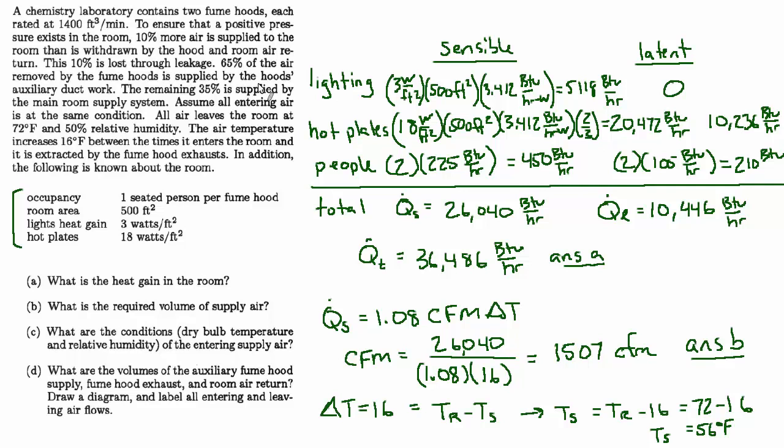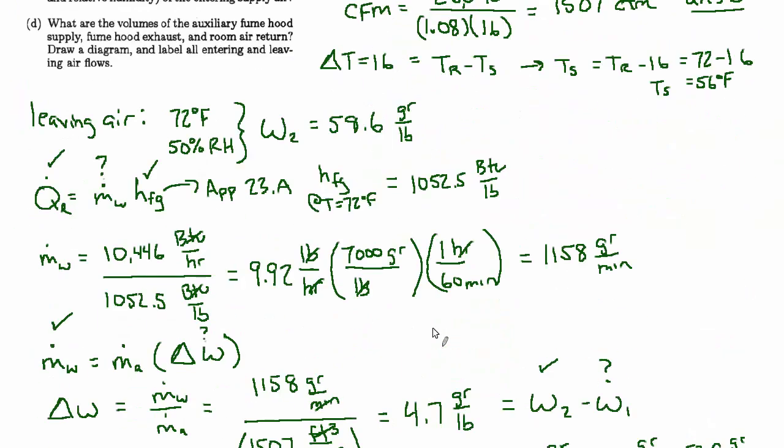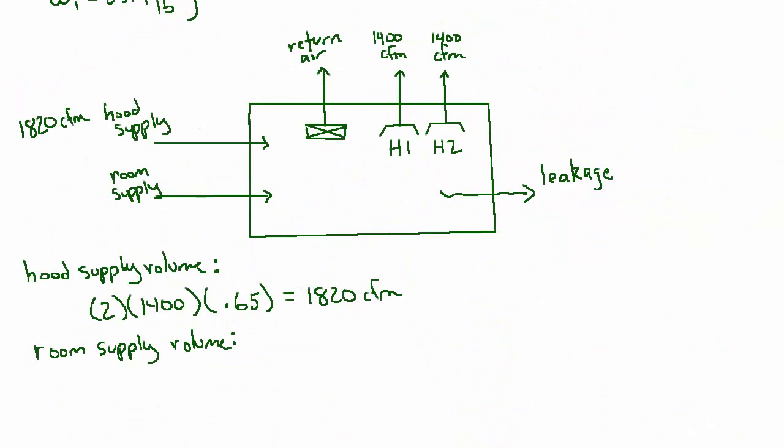It turns out that the volume we need is not the minimum to feed these hoods, it's the amount we need to satisfy the sensible heat load. And if there's extra, then that's going to go to leakage or to return air. So it's actually this 1507 CFM that we calculated based on the sensible heat load in the room. That's going to become that room supply volume - 1507 CFM. And now we have all of the supply defined.